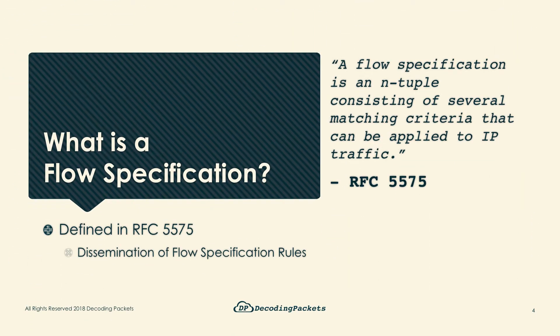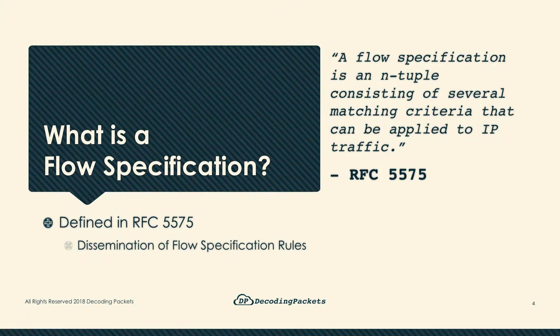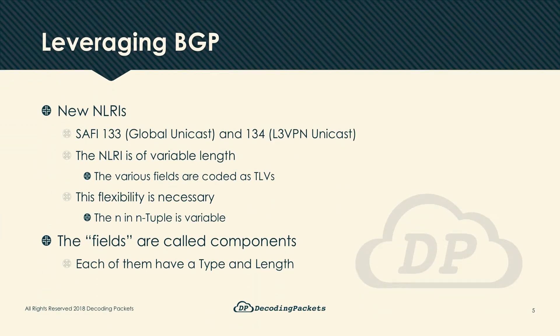What is a flow specification? It is defined in RFC 5575, 'Dissemination of Flow Specification Rules.' A flow specification is an n-tuple consisting of several matching criteria that can be applied to IP traffic. That statement, while appearing concise, is perhaps about as clear as the waters of Lake Erie in the mid-1960s.